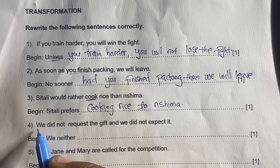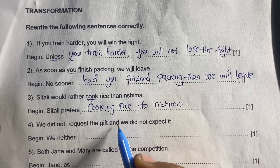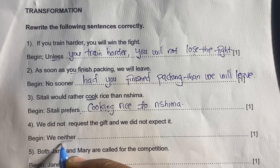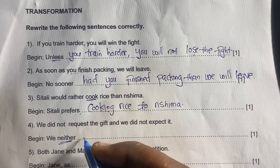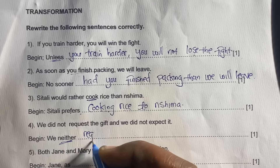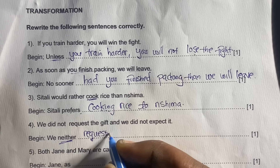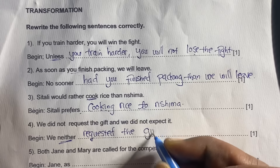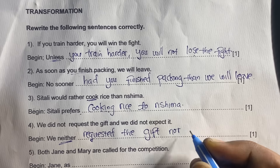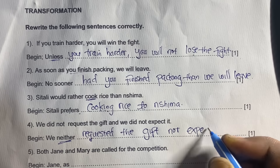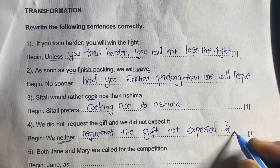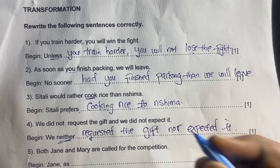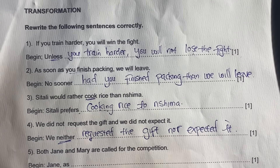Number four: 'We did not request a gift and we did not expect it.' Begin with 'neither.' Since we've started with a negative, we say: 'We neither requested the gift nor expected it.' This covers both negatives that were used in the original sentence.